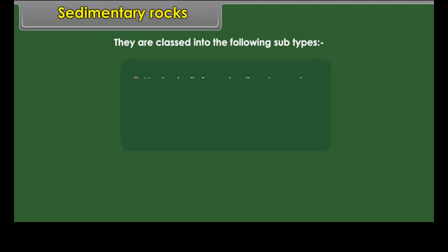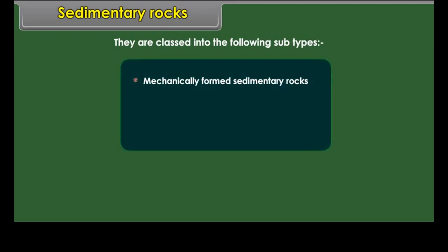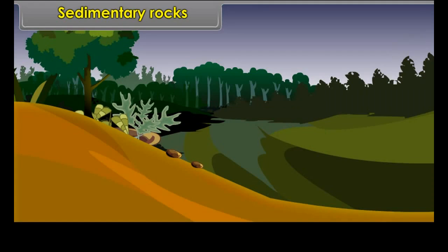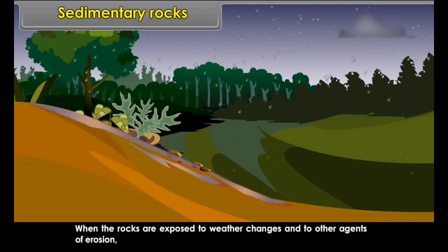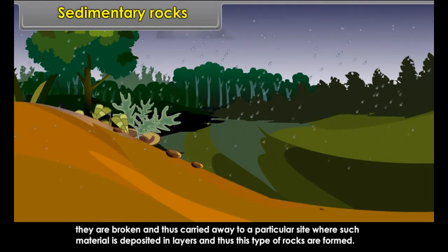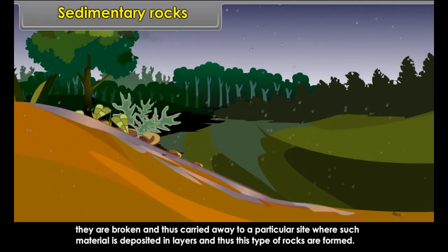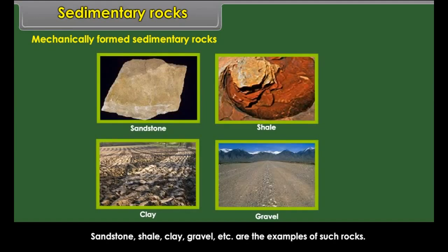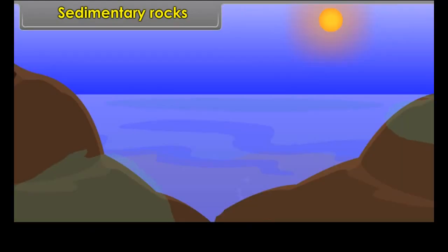Sedimentary rocks. Sedimentary rocks are those rocks which are layered or stratified. They are formed by agents of running water, wind, or glacier, which break and erode igneous and other rocks and transport them to a place where they are deposited in layers. These rocks often contain fossils of animals and plant life, and are comparatively soft.